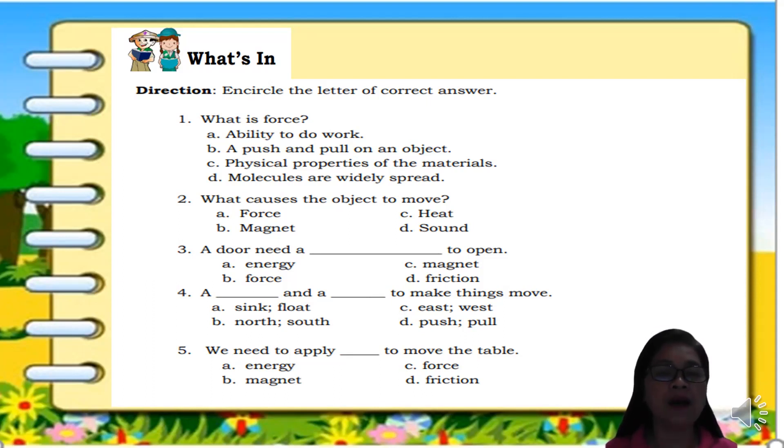Number three, a door needs a blank to open. A. energy, B. force, C. magnet, D. friction. The answer for this question is letter B, force. Number four, a blank and a blank to make things move. A. sink, float, B. north, south, C. east, west, D. push, pull.